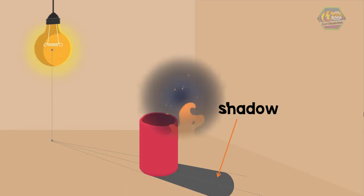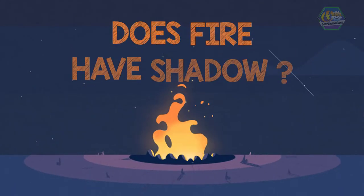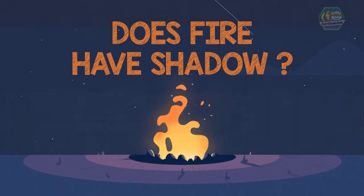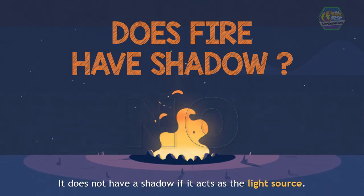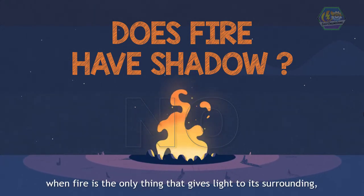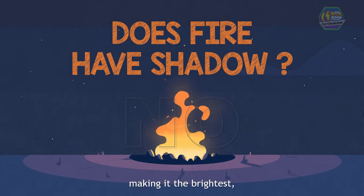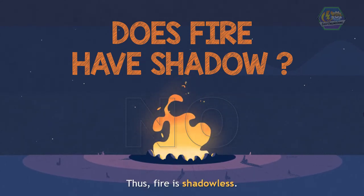So the interesting question is: does fire have a shadow when it is itself a light source? Basically, it's a no — fire does not have a shadow if it acts as the light source. When fire is the only thing that gives light to its surroundings, making it the brightest, it can never obstruct its own light. Thus, fire is shadowless.